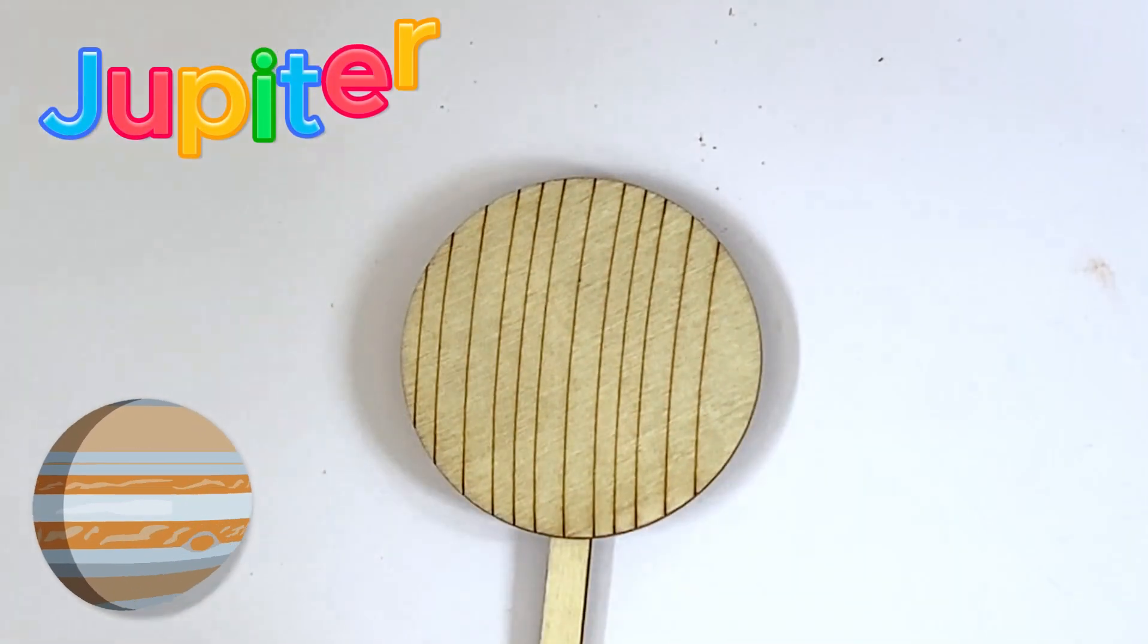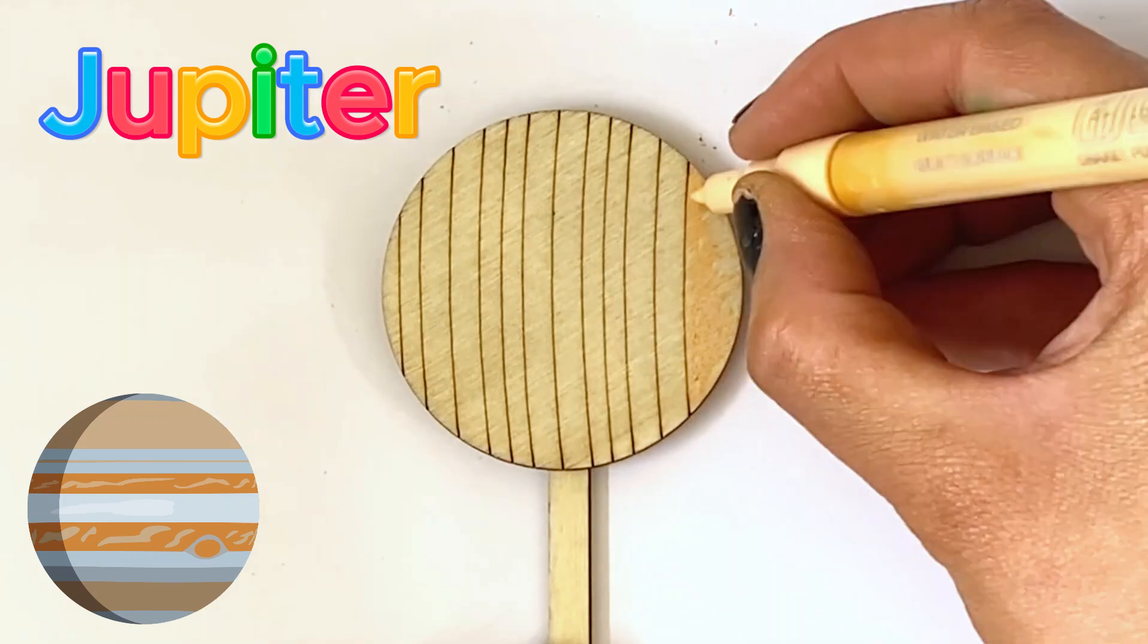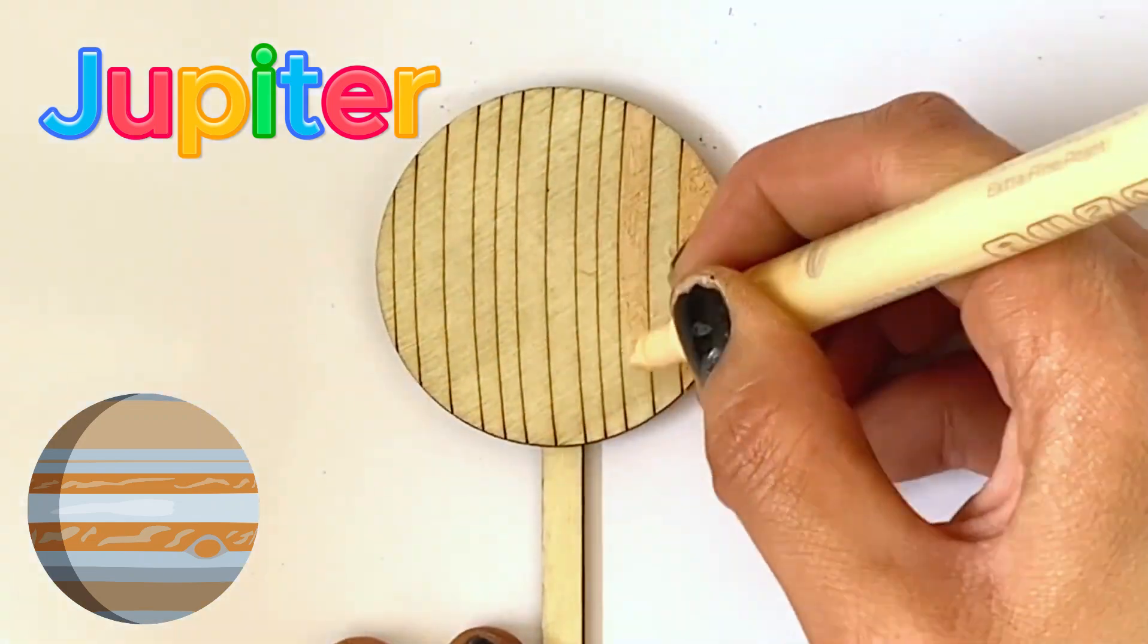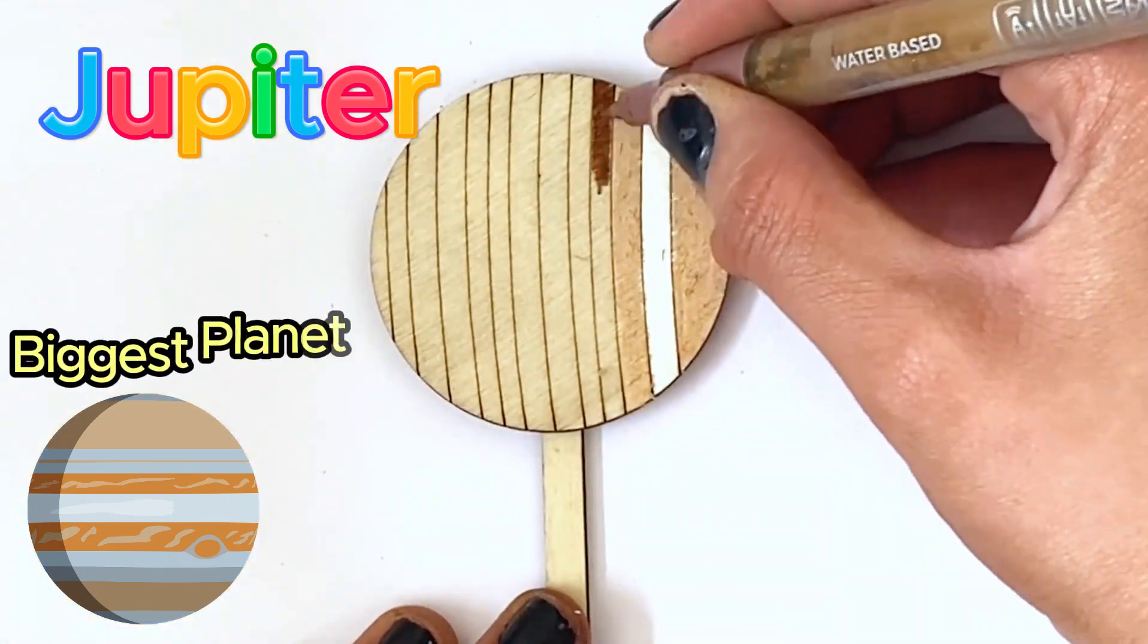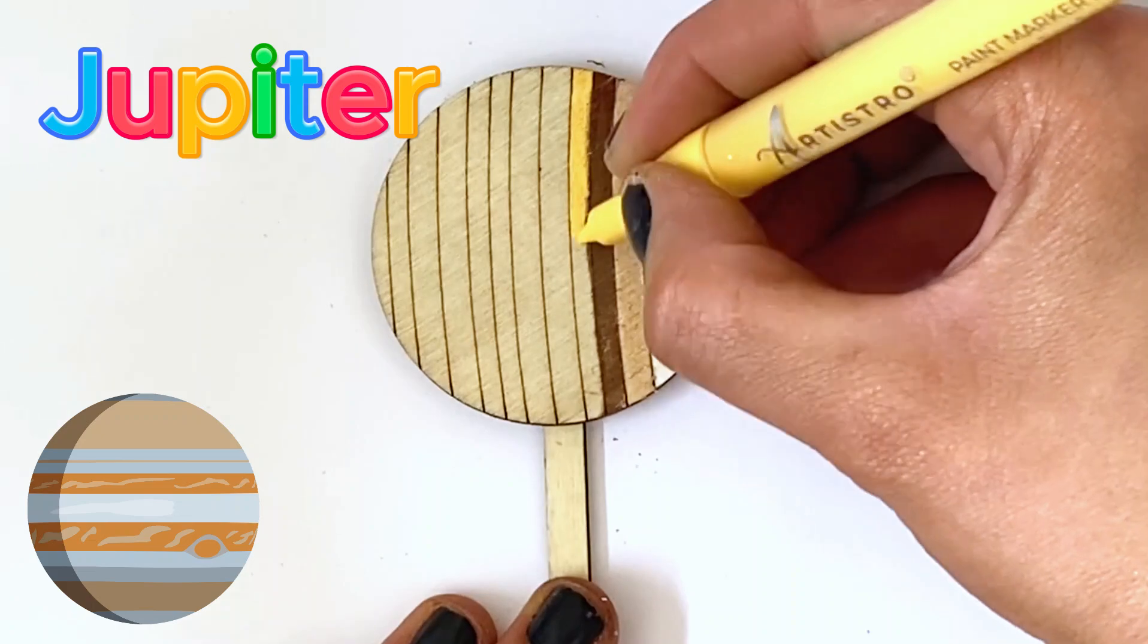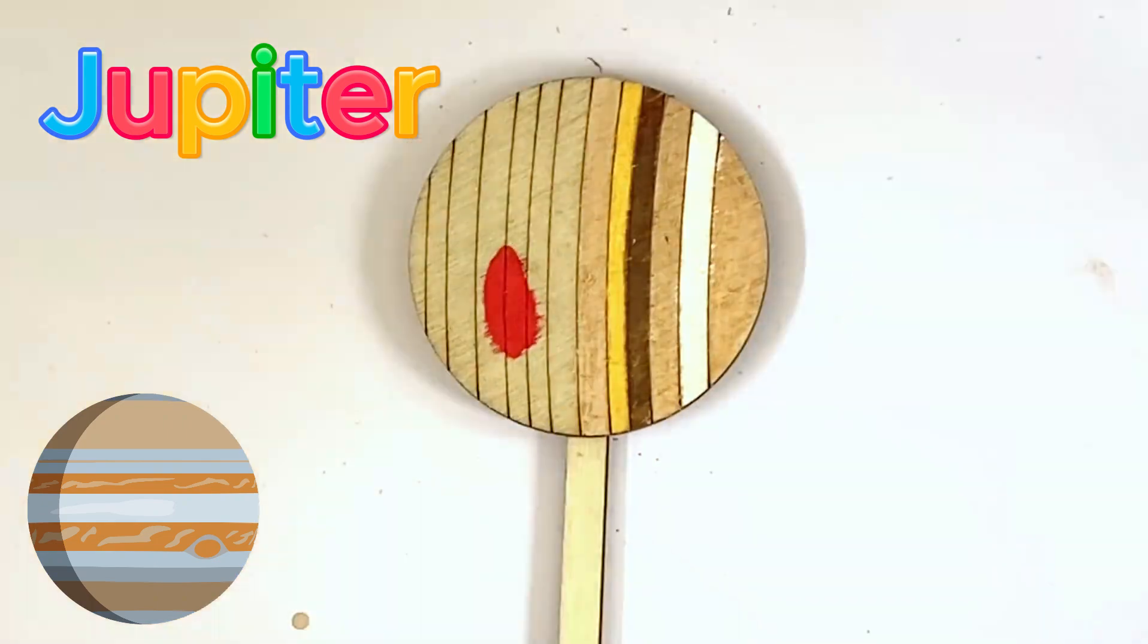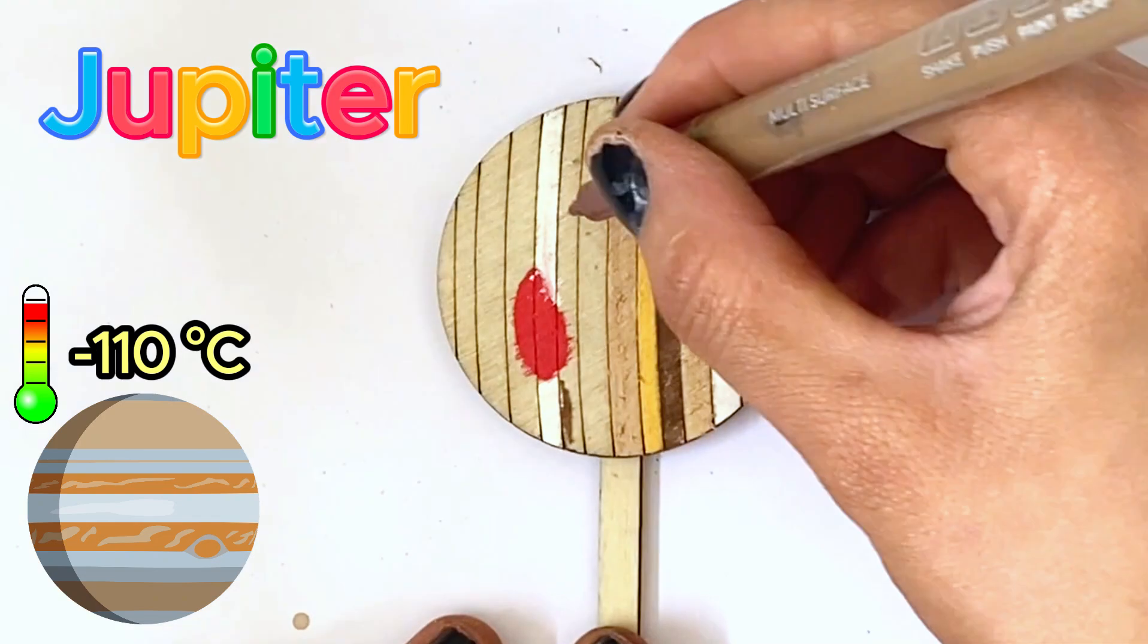The next planet we're painting is Jupiter. Jupiter is the fifth planet from the Sun and is the first of the Jovian planets, or gas giants, meaning they have no solid surface you could walk on. It is also the biggest planet in our solar system and has a famous red spot on it that we believe to be a giant storm, possibly twice the size of our home planet Earth. Jupiter has an average temperature of minus 110 Celsius.